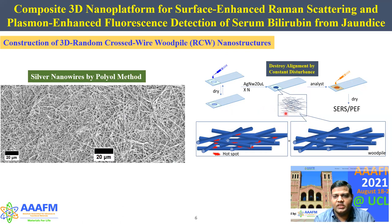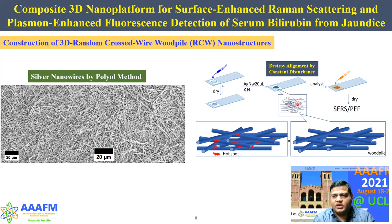This represents the structural disarrangement of silver nanowires. Once the substrate is ready, the analytes can be broadcast onto the substrate, followed by vacuum drying, which can then be used as a SERS or PEF analytical platform.